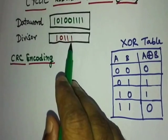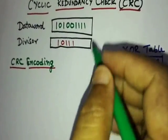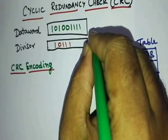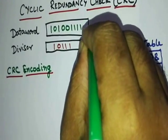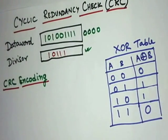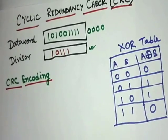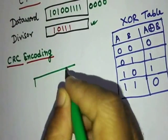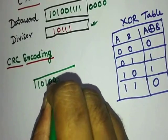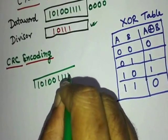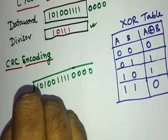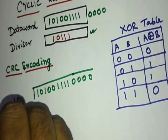The divisor is 10111. Whenever you have a divisor of 5 bits, we will append four zeros at the end of the data word and then divide it. So this is my data word: 1 0 1 0 0 1 1 1 1 0 0 0 0, and the divisor is 1 0 1 1 1.